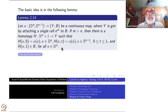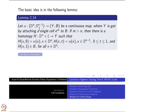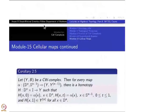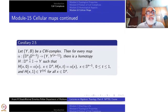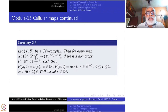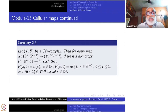Now we want to generalize the codomain. This is the first corollary: let (Y, B) be any CW complex (a relative CW complex). Then for every map α from (D^n, S^{n-1}) to (Y, Y^{n−1}) — taking the (n−1)-skeleton here — there is a homotopy H from D^n × I to Y such that H(x, 0) = α(x) to begin with, H(x, t) = α(x) always on the boundary, and H(x, 1) is in the nth skeleton Y^n.